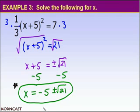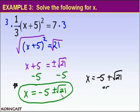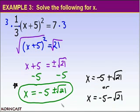Please note that our answer really represents two solutions: x equals negative 5 plus the square root of 21, or x equals negative 5 minus the square root of 21. So be aware that when we write an answer in plus or minus form, we really have two answers.